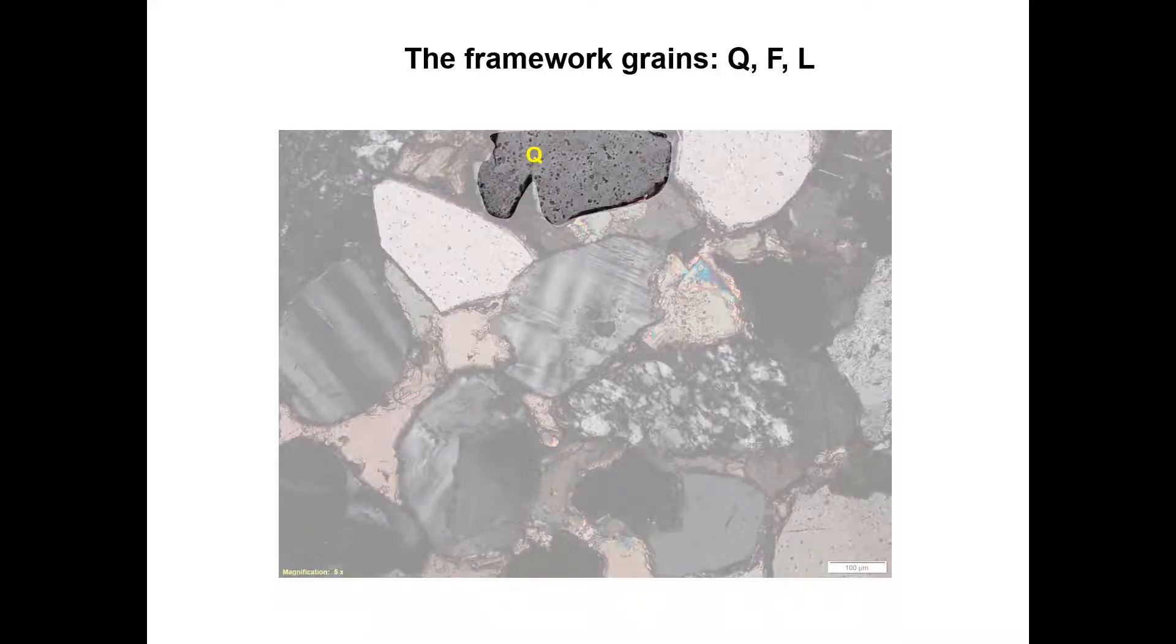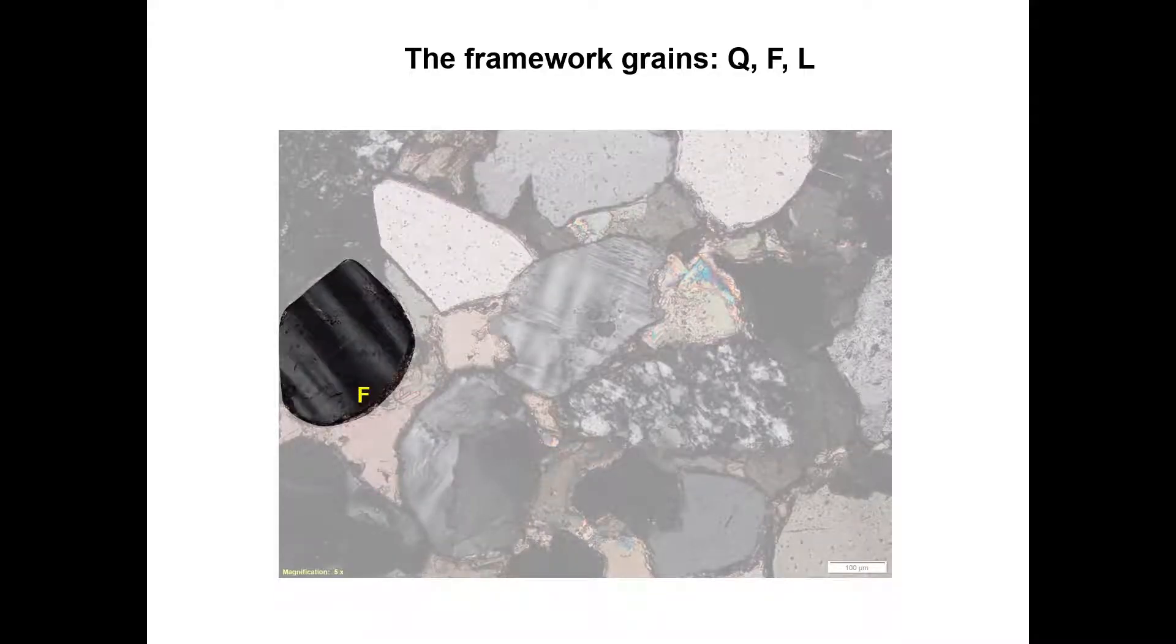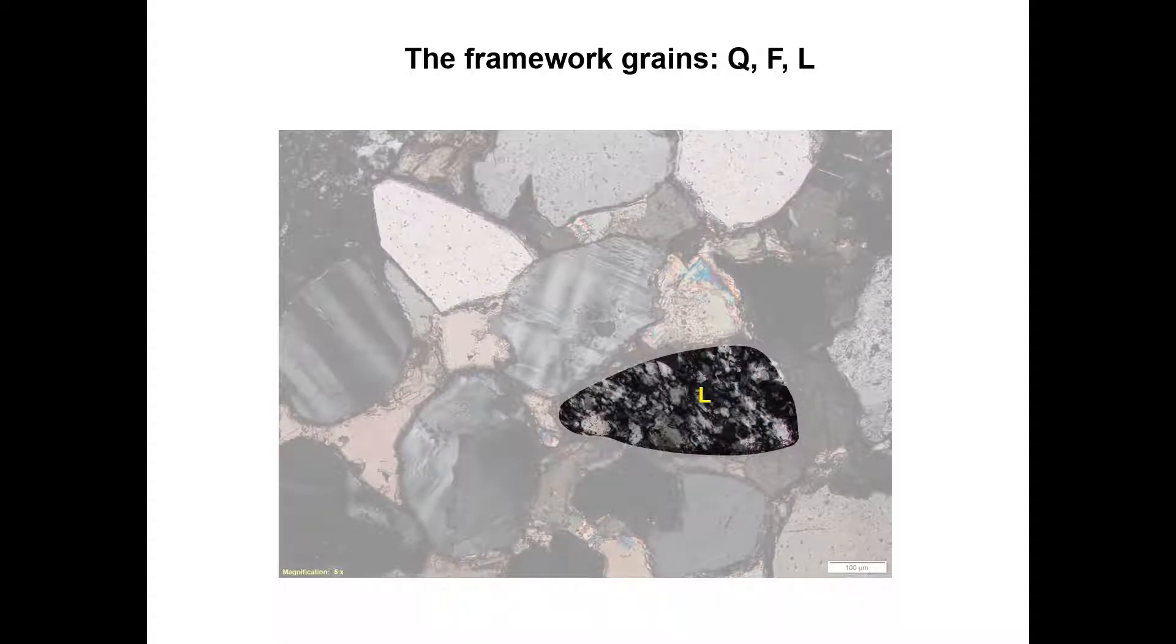Q refers to quartz. F refers to feldspar and comprises both the plagioclase and the alkali feldspar group. L means lithic fragments or simply lithics. You will also find RF as an abbreviation, which means rock fragment. These are fragments of other rocks that were broken down into roughly sand-sized particles. These may be igneous, sedimentary, or metamorphic in origin.